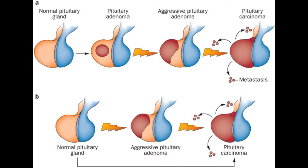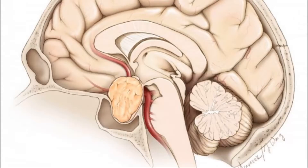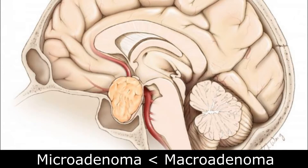The pituitary adenomas can become malignant. Once they are aggressive, they can metastasise and become invasive. For pituitary adenomas, you can have a micro adenoma and a macro adenoma. Micro is less than 10 mm and macro is more than 10 mm. Macro adenomas are more common.